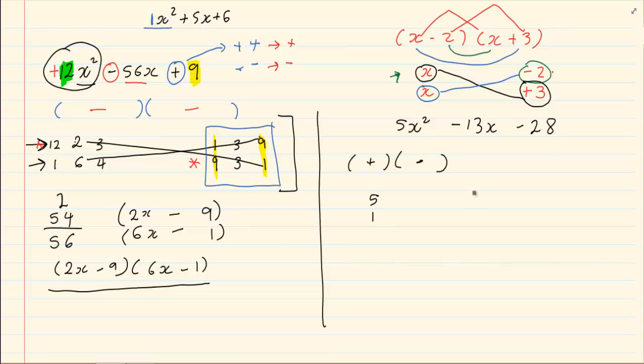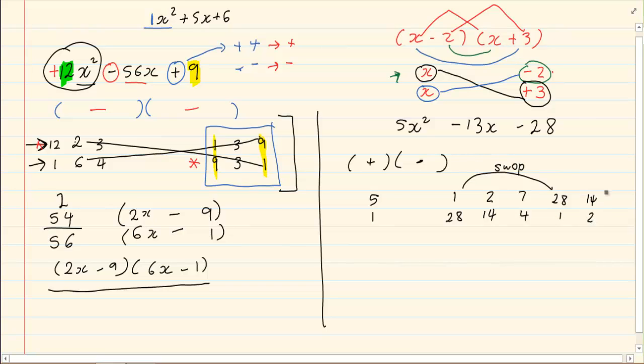Let us now write the factors of 5. We've got 5 and 1. We don't need to write 1 and 5 because we are always going to swap the factors of the last term. Now, the factors of the last term, we have 1 and 28, 2 and 14, 7 and 4. Then, we have 28 and 1. Notice, I am swapping them. 14 and 2, 4 and 7. So, number 1, we got the signs. Number 2, we got our multiples. Number 3, we are going to cross multiply.